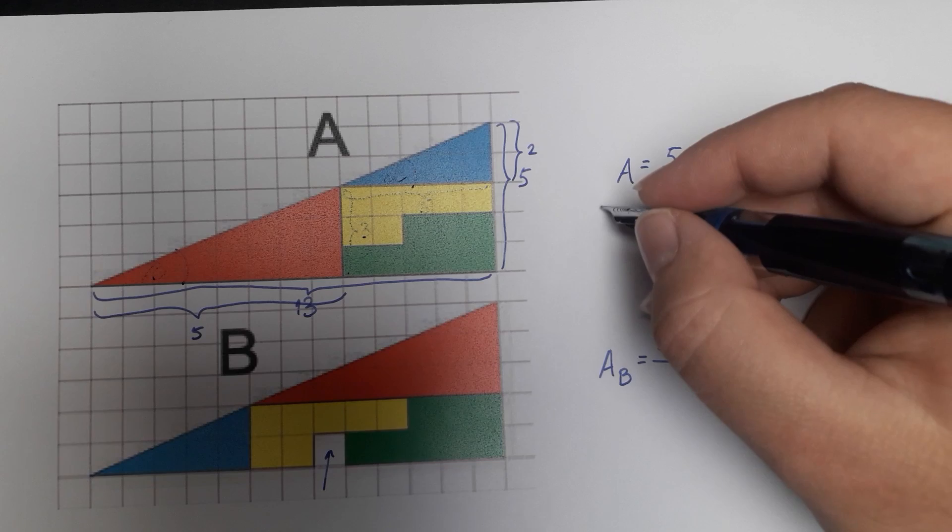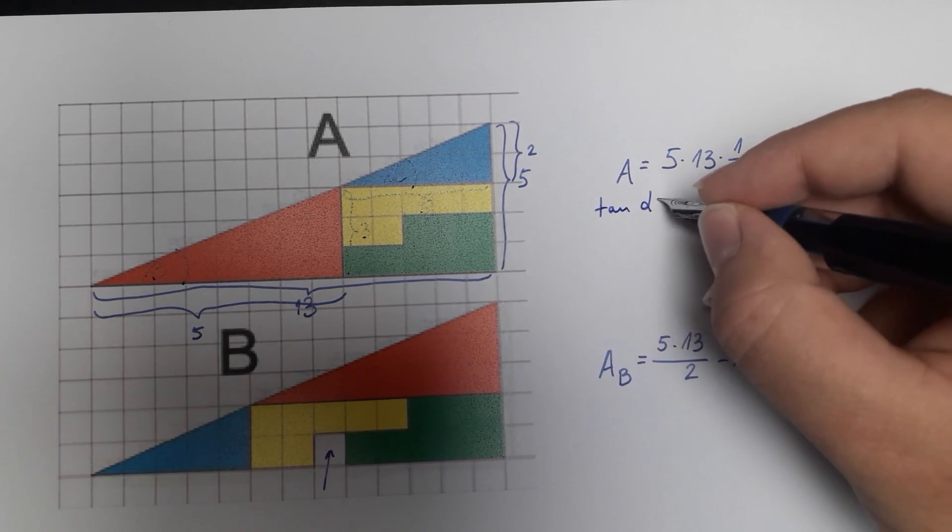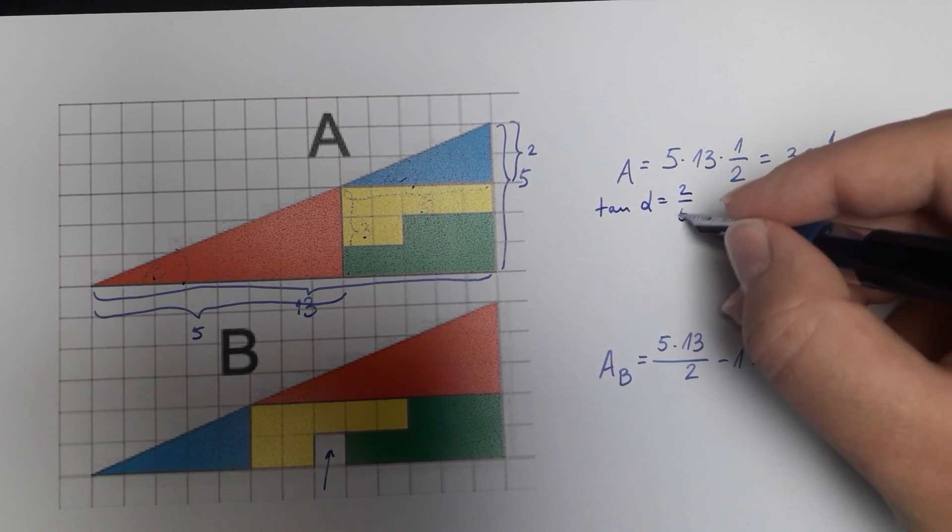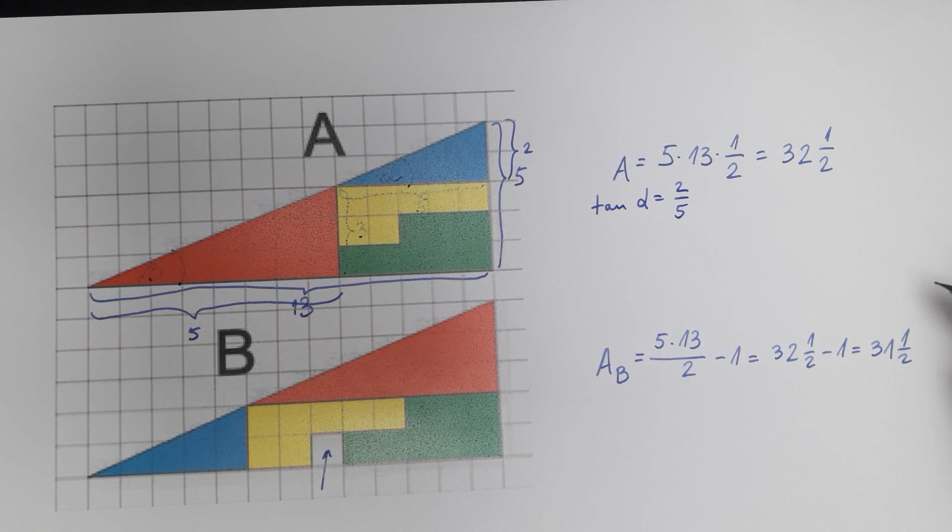Well that means that tan of alpha is equal to 2 divided by 5 as the opposite side divided by the adjacent. This ratio is also called the gradient of a triangle.